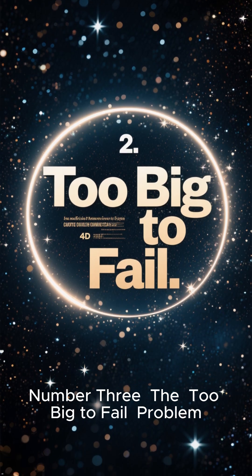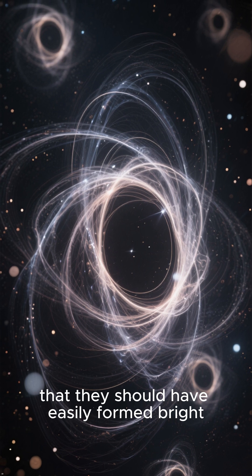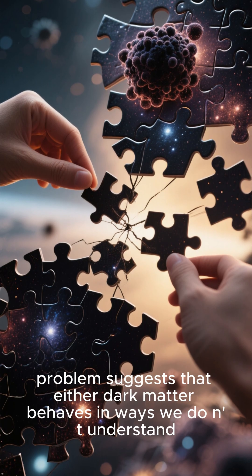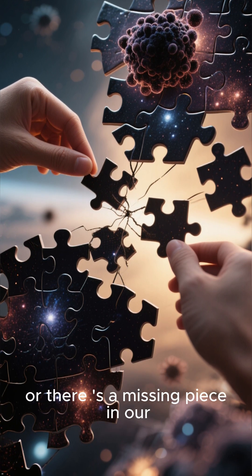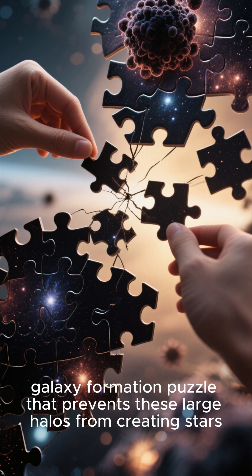Number 3: The too-big-to-fail problem. Some simulated dark matter halos are so massive that they should have easily formed bright, observable galaxies, yet we don't see them. This too-big-to-fail problem suggests that either dark matter behaves in ways we don't understand, or there is a missing piece in our galaxy formation puzzle that prevents these large halos from creating stars.